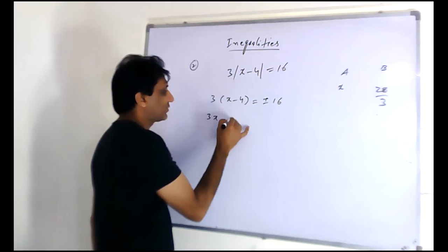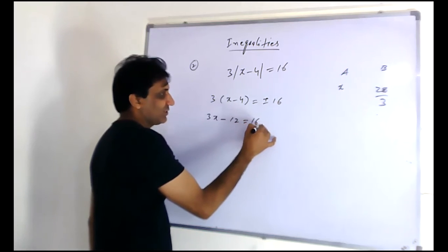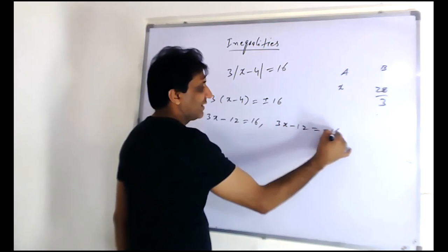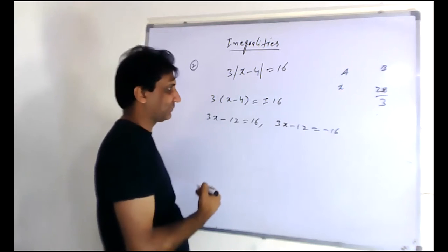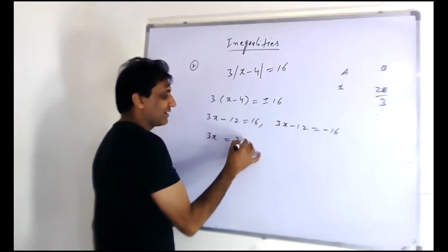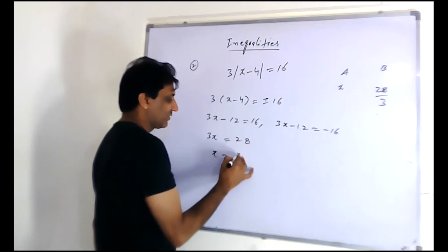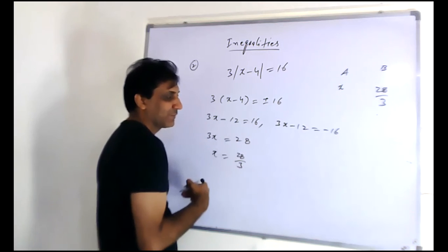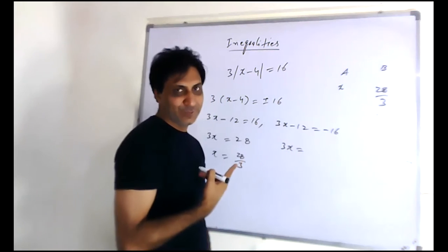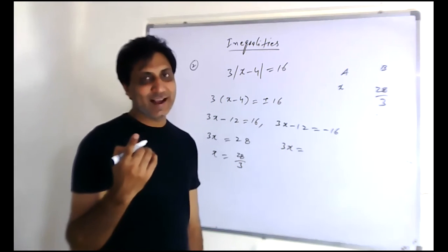3x minus 12 equals 16, and 3x minus 12 equals negative 16. Bring the 12 there. 3x equals 16 plus 12, which is 28. So x equals 28 over 3. But when you bring this there, we are getting two different answers.